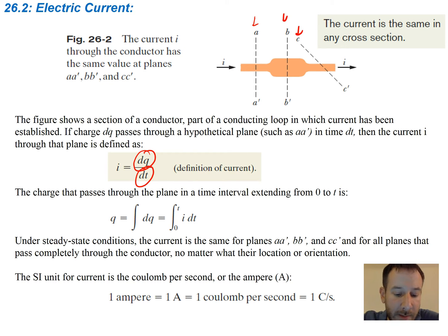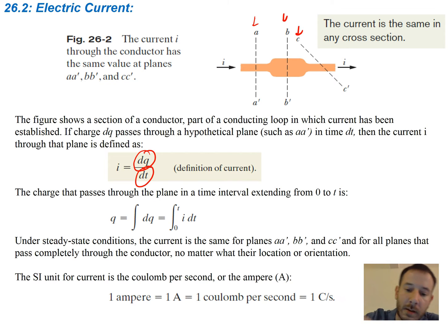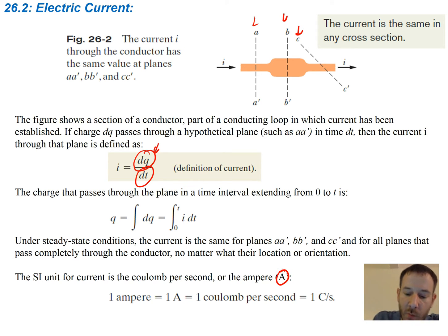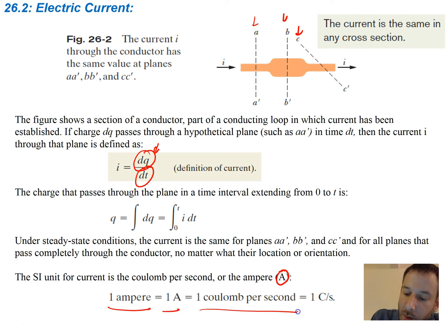The SI unit for current is the coulomb per second, as you can see from the equation. We call that an ampere, given by a capital A. So one ampere equals one coulomb per second.